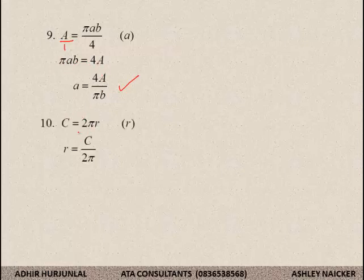Number 10. The circumference of a circle. In order to solve for R, it is equal to C divided by 2 pi. Guys, how is it going so far? I hope you are getting these things correct.